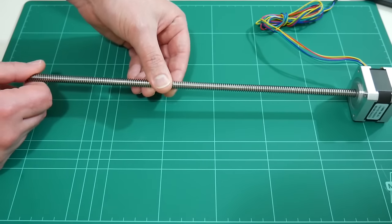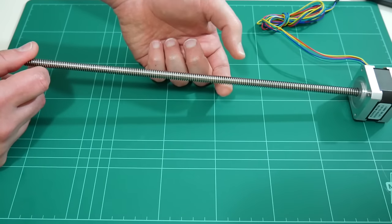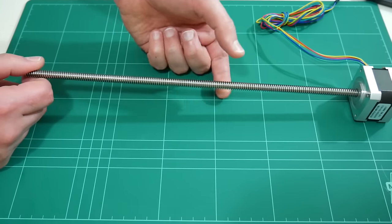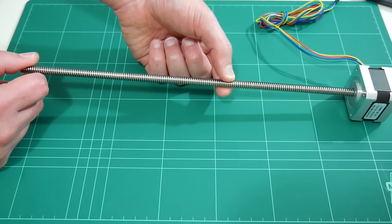In fact, the only thing that we need to be mindful of is the diameter of the lead screw itself. This one here is 8mm. So we're stuck with replacing the lead screw within this motor with another one of an 8mm diameter.